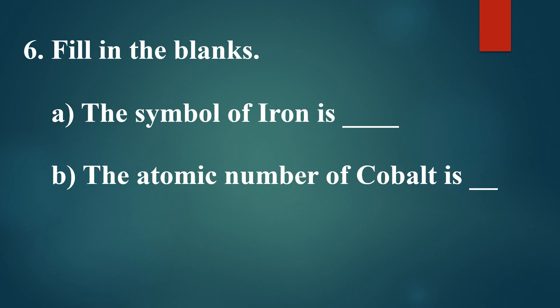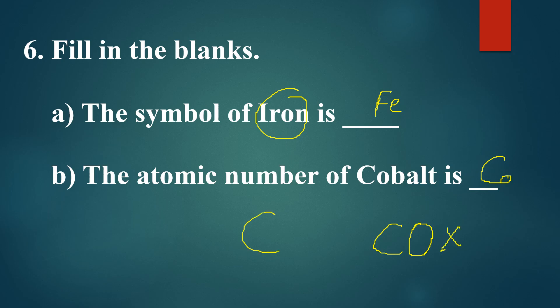Next, fill in the blanks. The symbol of iron: the Latin name of iron is ferrum, so its symbol is Fe. For cobalt: you write capital C then small o — Co. Note that you must not write capital C capital O, as that would be CO, which is carbon monoxide. So write Co properly with a capital C and small o.